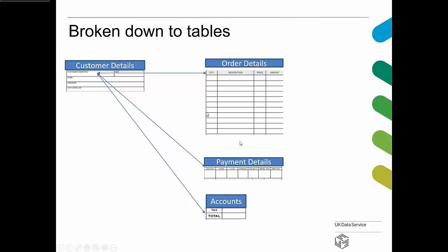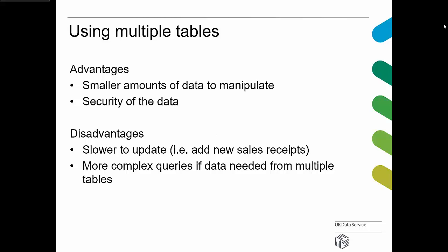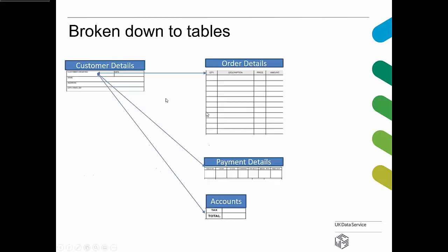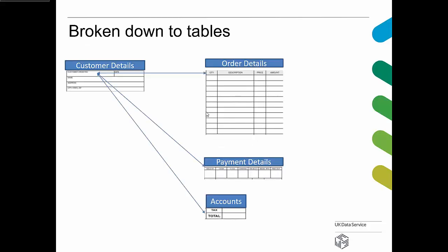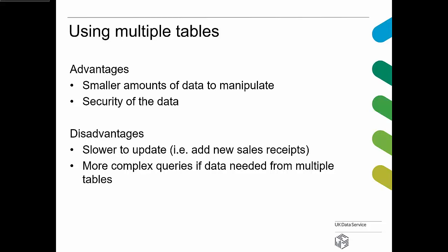Advantages of using tables: a small amount of data to manipulate, as just described, and the security of the data. A modern relational database would allow you to restrict who can see each table. For example, the people in publicity sending out catalogues have no need to know how much money a customer spent, so you can hide that from them. Disadvantages include it being slower to update — you now have to add bits of data into four separate tables rather than a single sheet. There are also more complex queries when pulling data from more than one table.